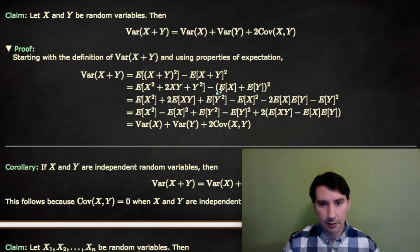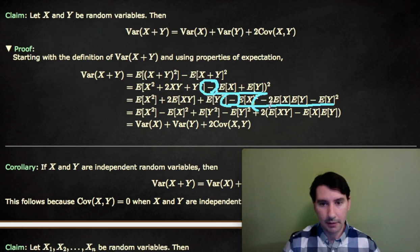And we're going to square the second term. So E of X plus E of Y squared is E of X squared plus 2·E of X·E of Y plus E of Y squared. There's a minus sign out front, so everything becomes minus.